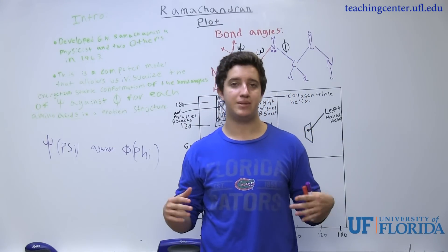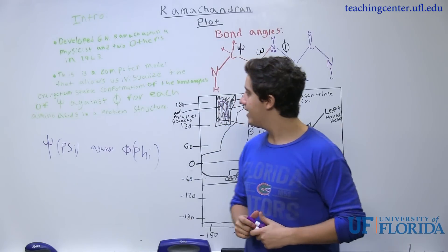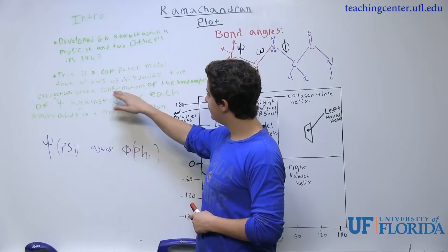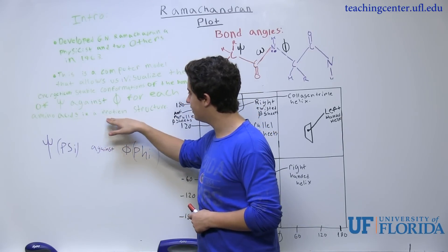The Ramachandran plot was originally developed in 1963 by G.N. Ramachandran along with two others. This is a computer model that allows us to visualize the energetically stable conformations of the bond angle psi against phi for each of the amino acid residues in a protein.